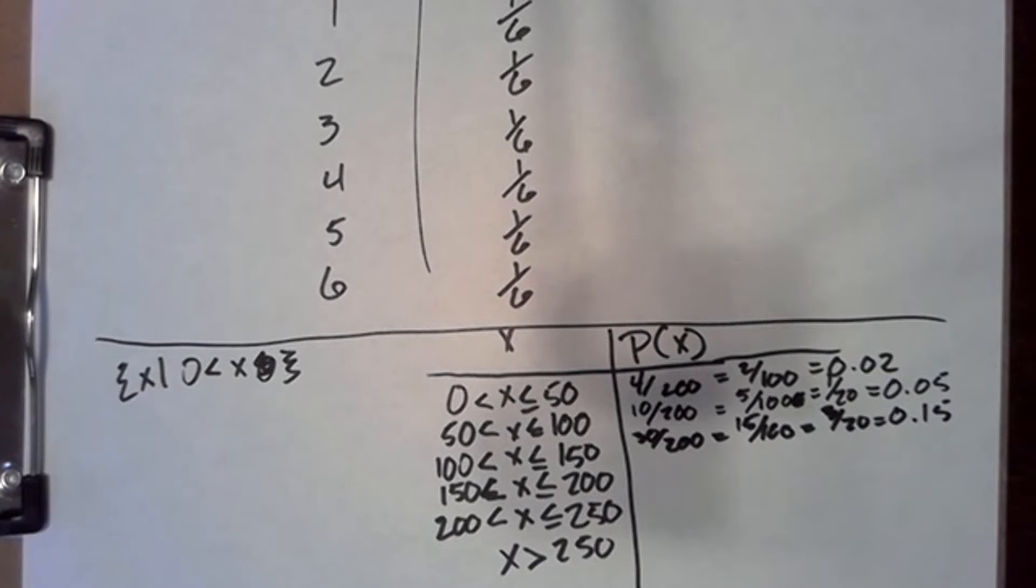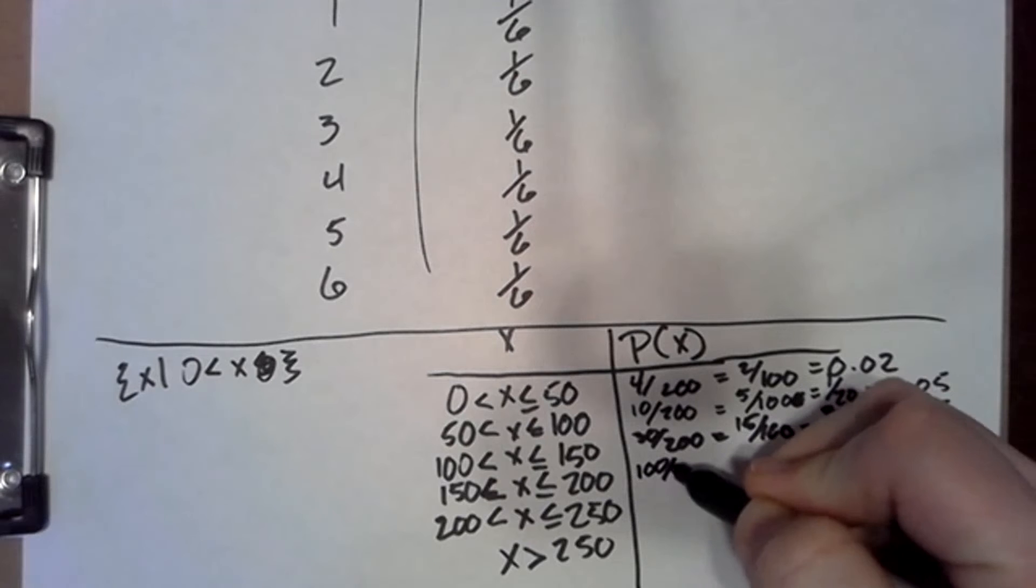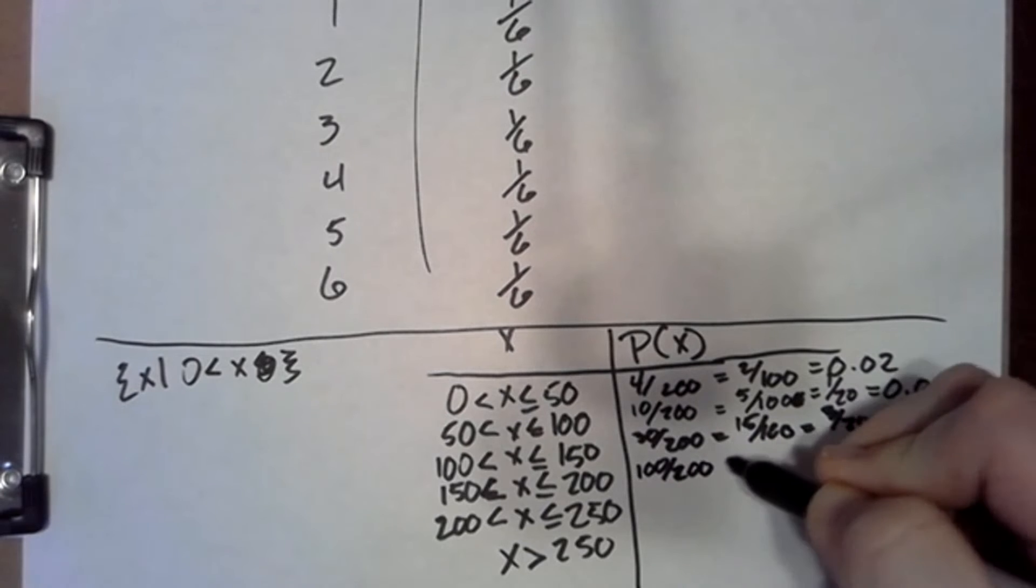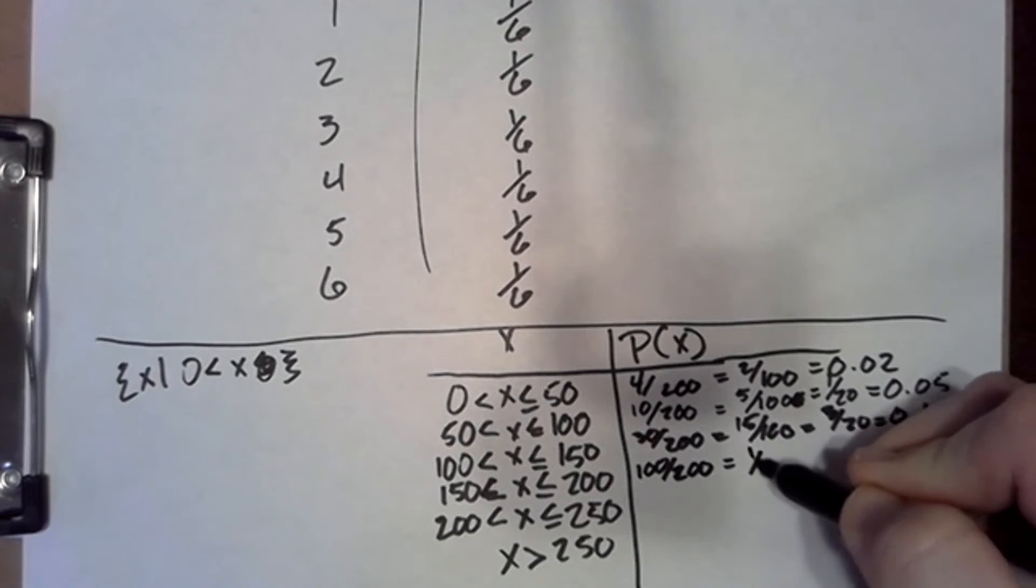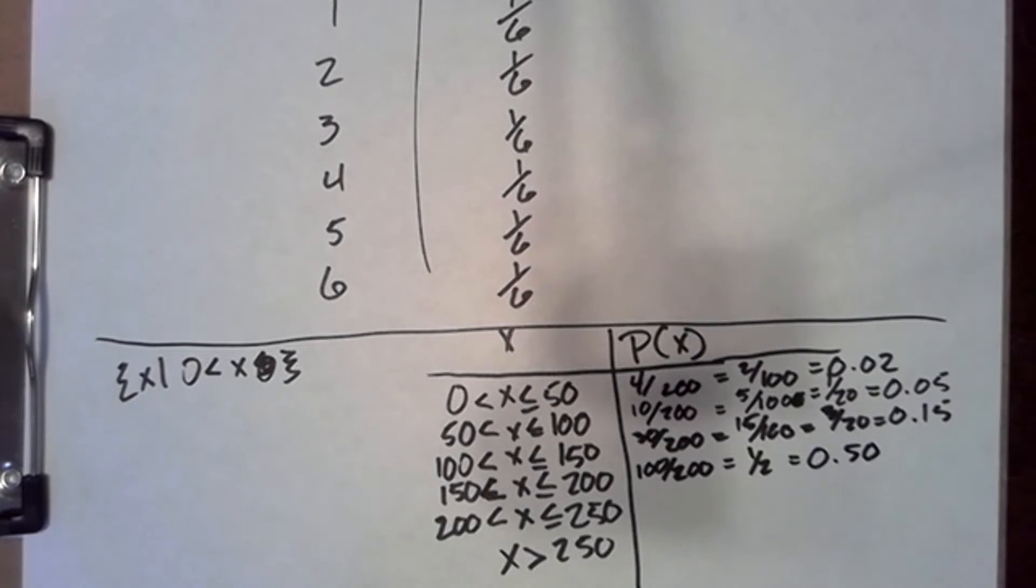From 150 to 200, we've got 100 out of 200, which is, of course, one-half. And we could also write that as 0.50, 50 hundredths.